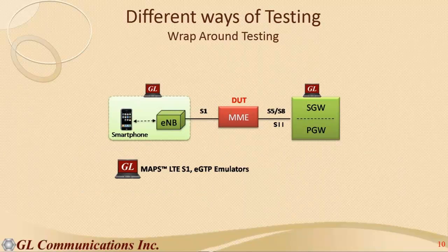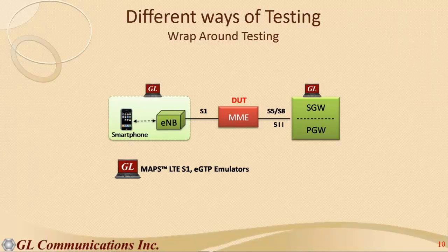One more way of testing is wrap-around testing, where the terminating ends are GL MAPS and the MME is being tested as a DUT. GL MAPS acts as the E-NodeB, and on the network side it acts as the HGW and PGW gateways. So in this setup, the MME is tested against the E-NodeB and the serving gateway in a wrap-around fashion.